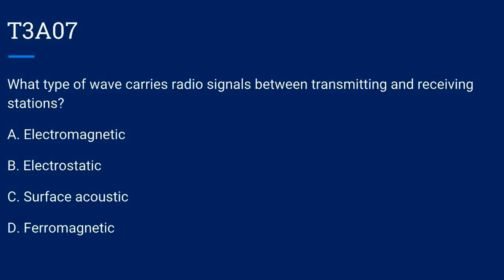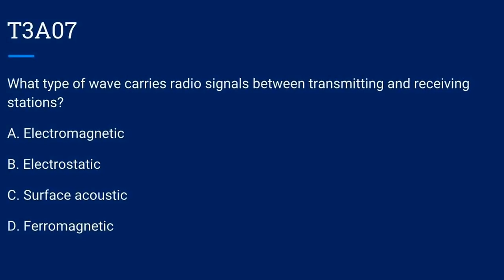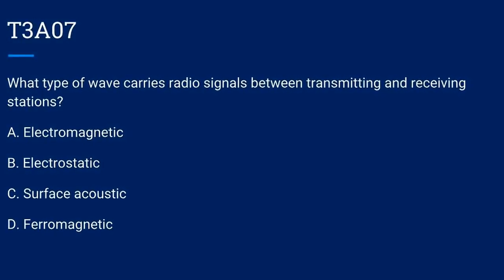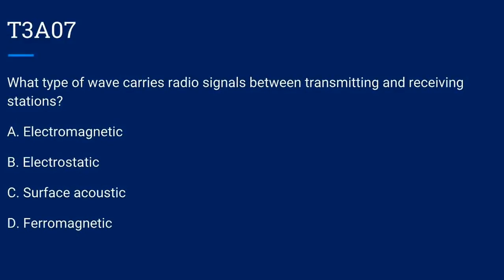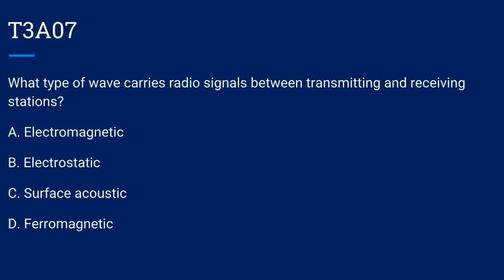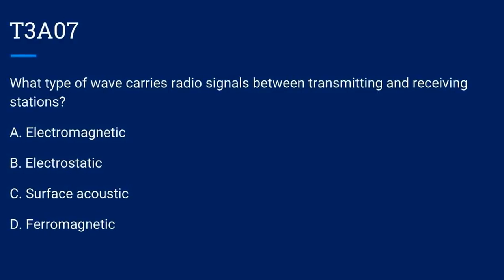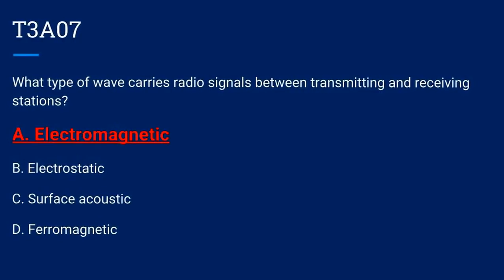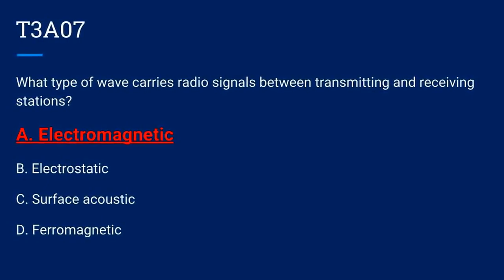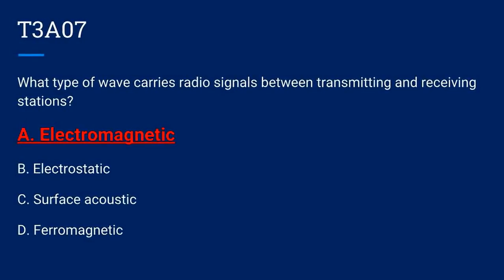T3A06. What type of wave carries radio signals between transmitting and receiving stations? A. Electromagnetic. B. Electrostatic. C. Surface acoustic. Or D. Ferromagnetic. Correct answer is A: electromagnetic.